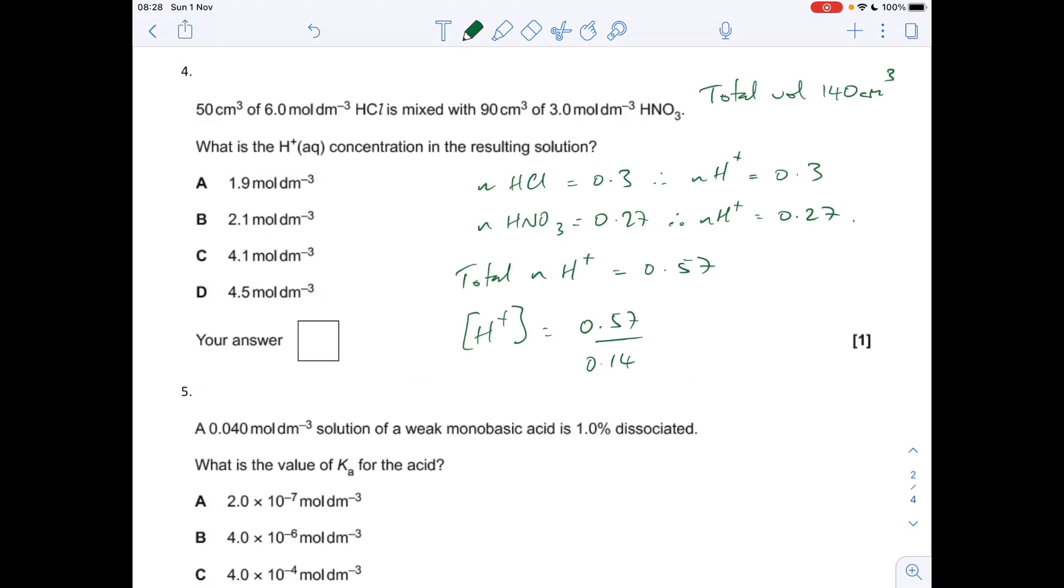Question 4: there's a lot to do for this one mark. We've got to work out the H+ concentration when you mix those two acids together. The starting point: the total volume of the 50 cm³ and the 90 is 140. The moles of HCl going into the solution is concentration times volume, so 0.3. It's monoprotic, so the moles of H+ will also be 0.3.